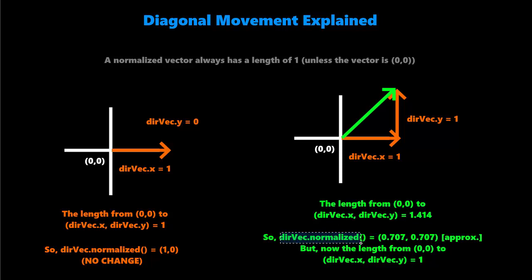So when we do direction vector.normalize, what the vector does is it adjusts the x and y position to make sure that the length of the vector stays at 1. So it'll actually approximately make it equal to 0.707 on the x and 0.707 on the y. And now,